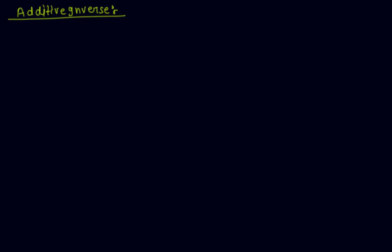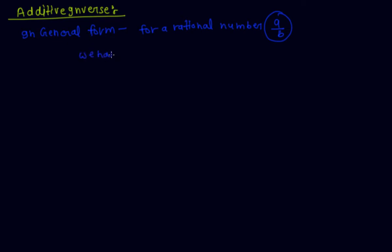Hi friends, this is Prithyanshu. Today I discuss additive inverse. In general form, for a rational number a by b, we have a by b plus minus a by b equal to 0, or we can say minus a by b plus a by b equal to 0.